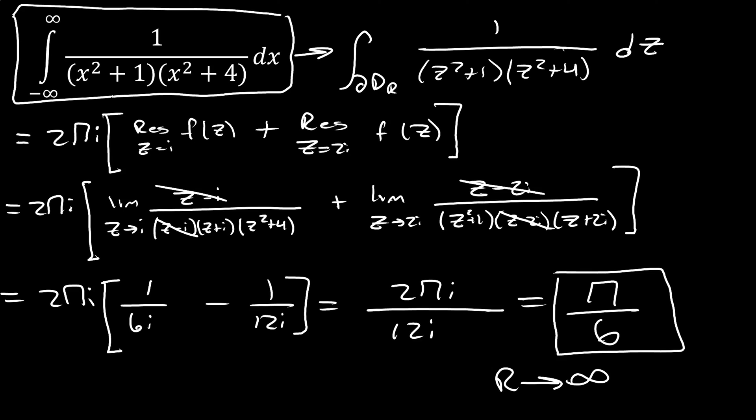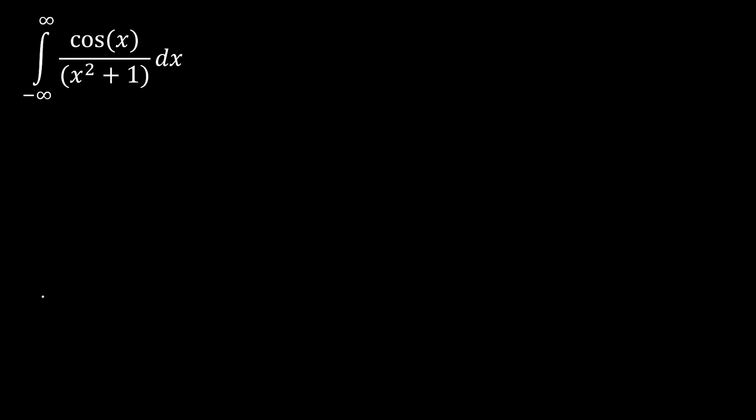Now let's dive into that last really nasty looking integral: the integral of cos(x) divided by (x² + 1). I would not even know where to begin evaluating this by real methods. For physicists or applied mathematicians, you might say this is something from an integral table — but as you'll see, you can evaluate it pretty quickly with Cauchy's Residue Theorem. In fact, a lot of the integrals given on integral tables are ones evaluated with Cauchy's Residue Theorem.